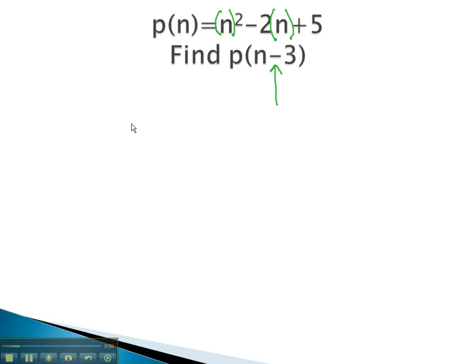This means we are going to replace all the variables in the original function with n minus 3. So now, instead of seeing n squared, it gets replaced with n minus 3 squared. Minus 2n, but instead of just writing n, it's going to be replaced with n minus 3. Finally, plus 5. Notice we have replaced each of the variables with the expression n minus 3.